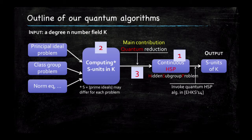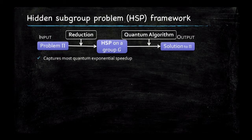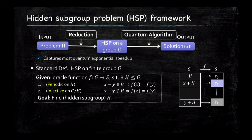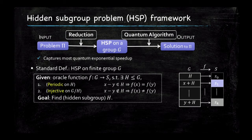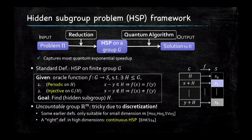The hidden subgroup problem: there have been several interesting computational problems in number theory that can be reduced to the problem of finding a subgroup of a certain group G. The way it's usually done is to let F be a function from the group to quantum states such that F(x+y) = F(x) if and only if y is in a secret subgroup. Then we say that F hides the subgroup. The tricky case is when dealing with subgroups of R^m, because the discretization causes troubles when the degree goes to infinity.